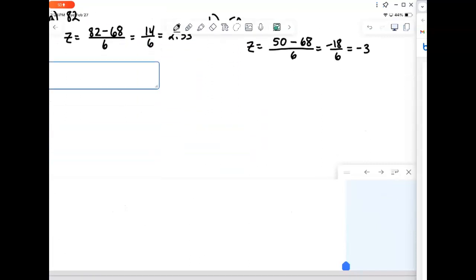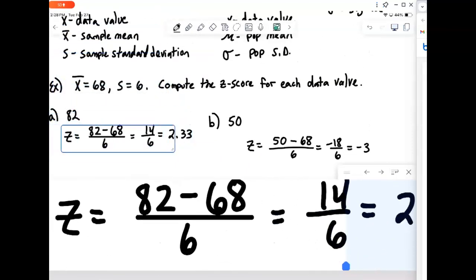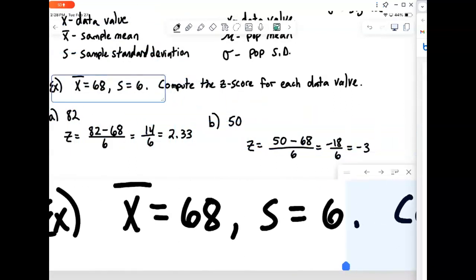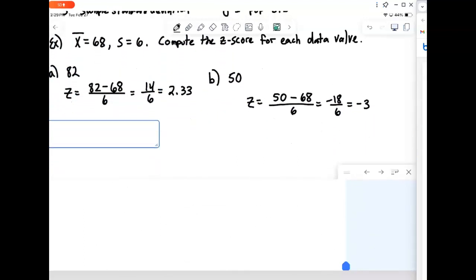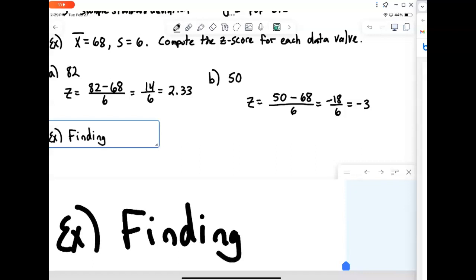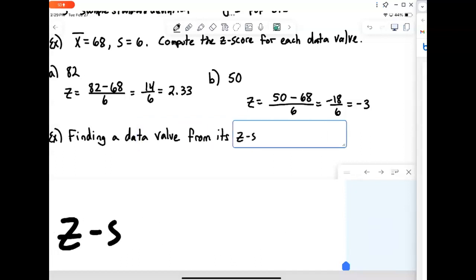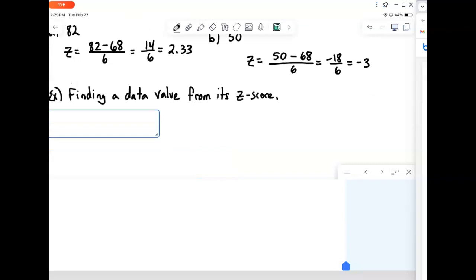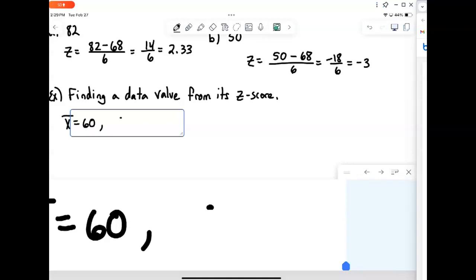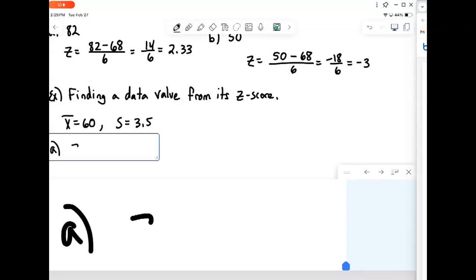And now we turn and look at things the other way. So since the z-score tells us how many standard deviations we're either above or below the mean, we can actually use the z-score to figure out a particular number. So now we're going to talk about going it the other way, and that is finding a data value from its z-score.